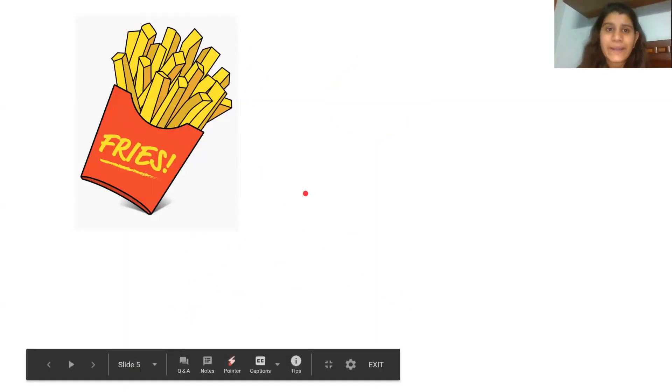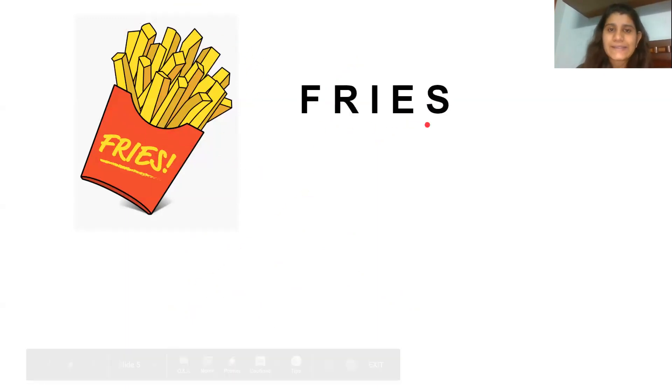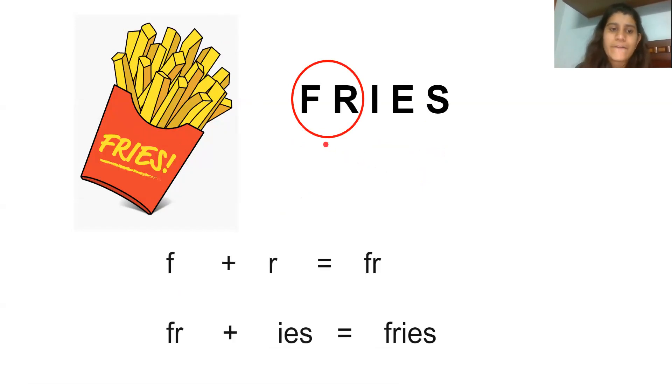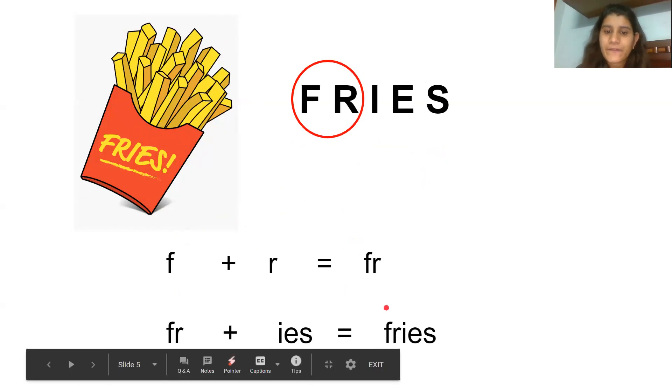Now what are these? These are French fries. We all eat them, na? So fries. Fries. Where do you hear the sound? Fr. Is it in the beginning, middle or end? It is in the beginning. Fr-i. Fries. Let's see how this sound is made. Fr. Fr. Fr. Fr. Fr. Now, fr-ice. Fries.